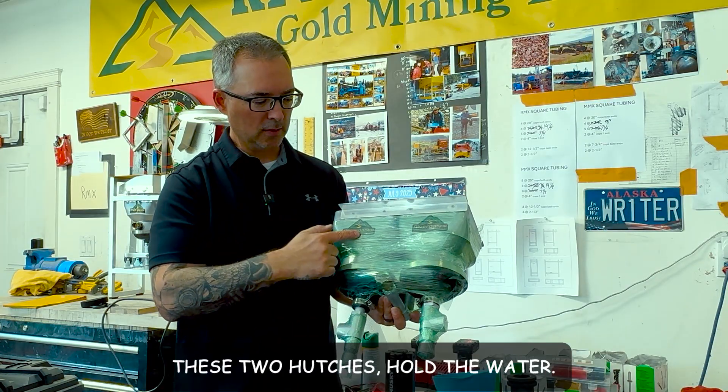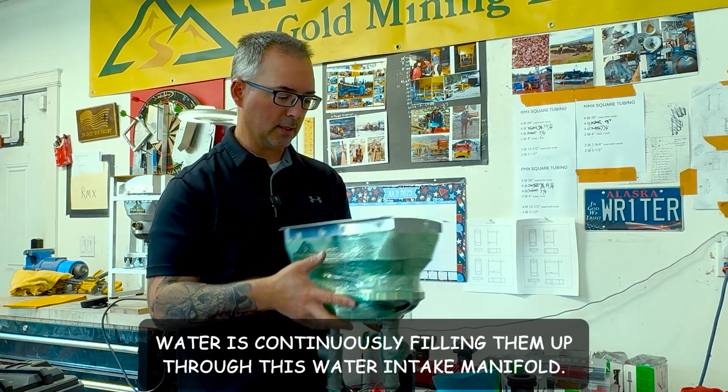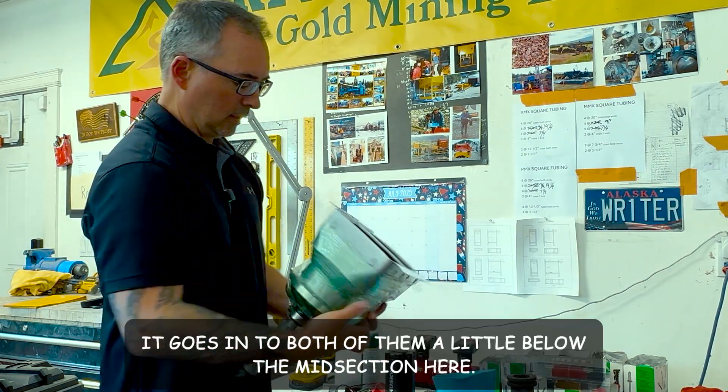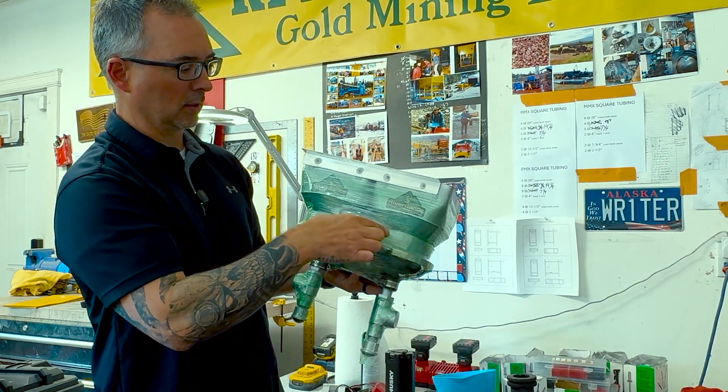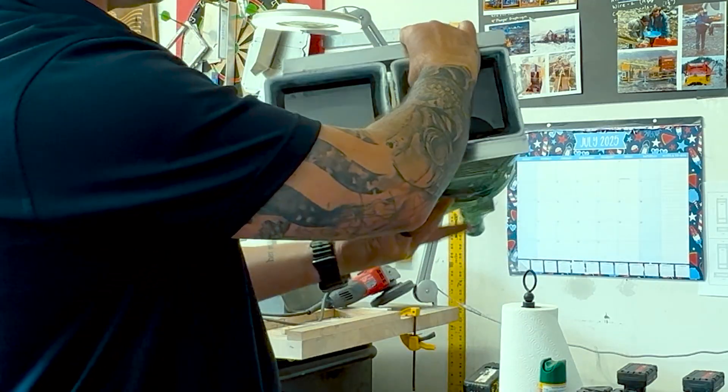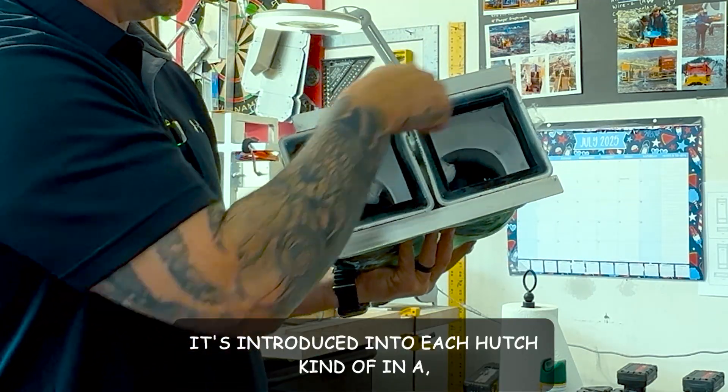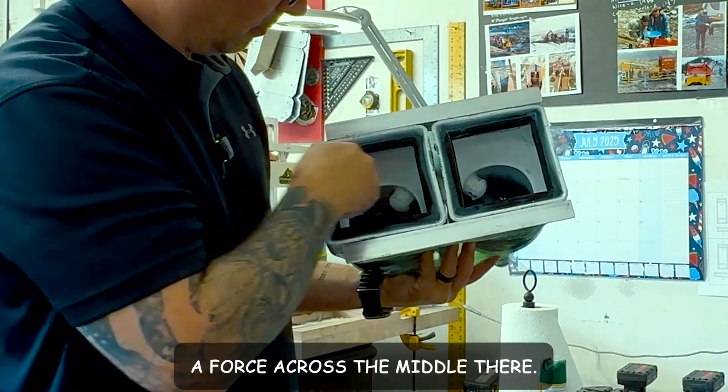These two hutches hold the water. The water is continuously filling them up through this water intake manifold. It goes in to both of them a little below the midsection here. And then if you can see in here, it's introduced into each hutch kind of in a force across the middle there.